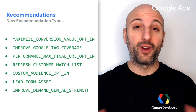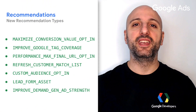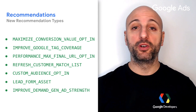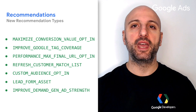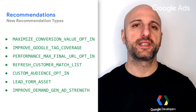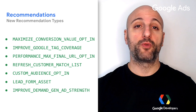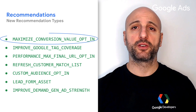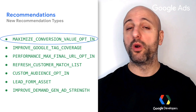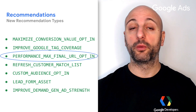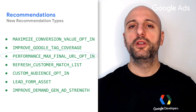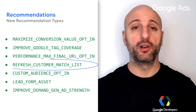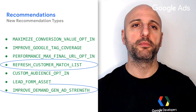Let's begin with recommendations. In v16, we added support for seven new recommendation types in the API to help your users improve their Google Ads campaigns and maximize their results. These range from recommending your users adopt some Google Ads features, like the maximize conversion value bidding strategy or the final URL expansion for performance max campaigns, to tweaking settings of features your users are already adopting, like customer lists or demand gen campaigns.